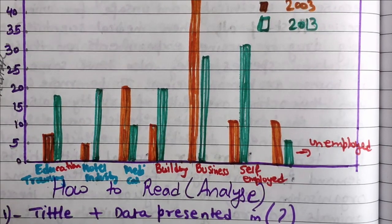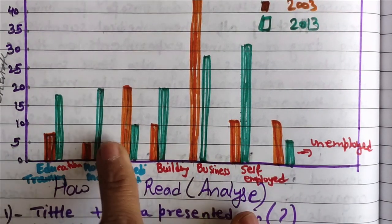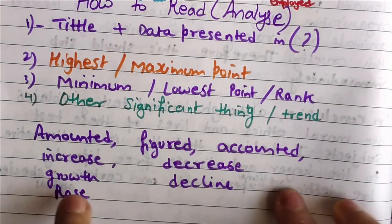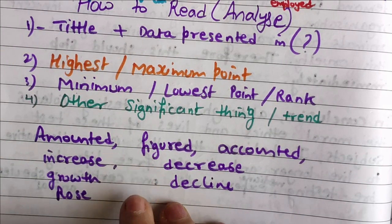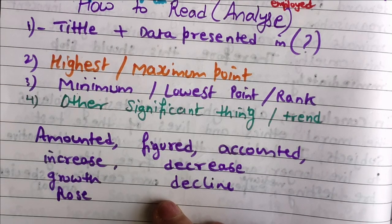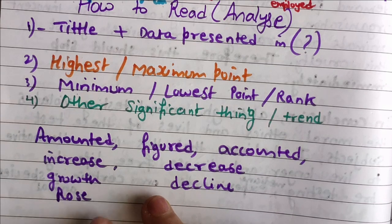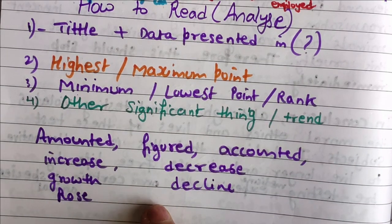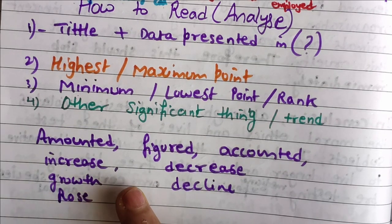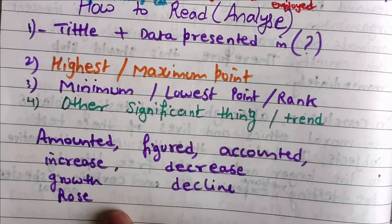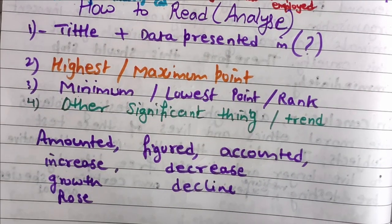Now, what vocabulary are you going to use for writing task 1? I will show you some words you can use. For a detailed vocabulary video, I have already made one for the January IELTS exam — you can see it on the thumbnail. There I have shared detailed vocabulary about bar graphs, tables, pie charts, and all kinds of charts in detail.